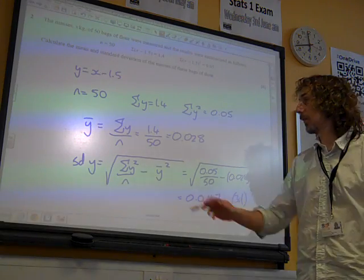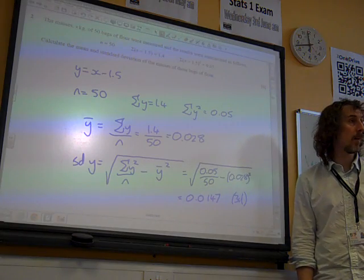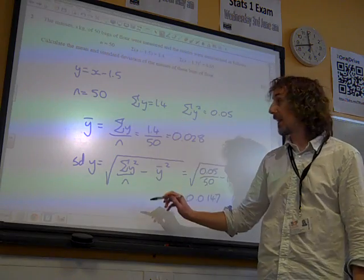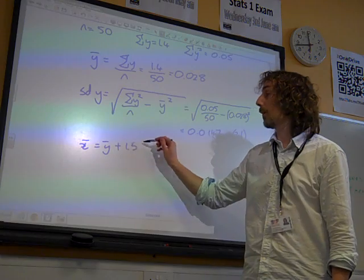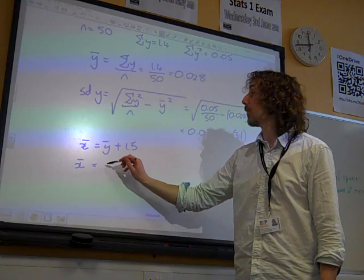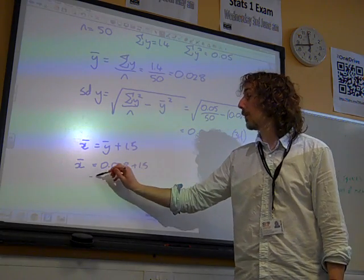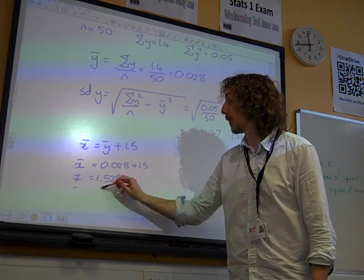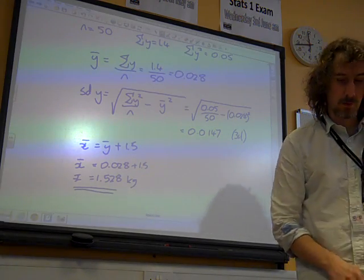Okay, we have found the mean of y and the standard deviation of y, but the question was about x, the bags of flour. So now we need to undo the coding. Now if y is x minus 1.5, x bar is y bar plus 1.5. So the mean of x is 0.028 plus 1.5, so 1.528 kilograms, or 1.53, if we're going to give our answer to three significant figures.